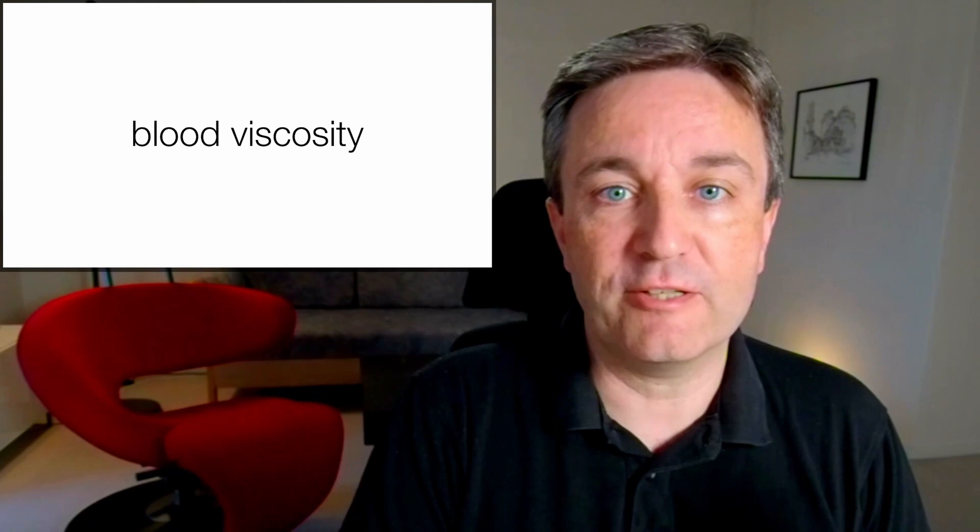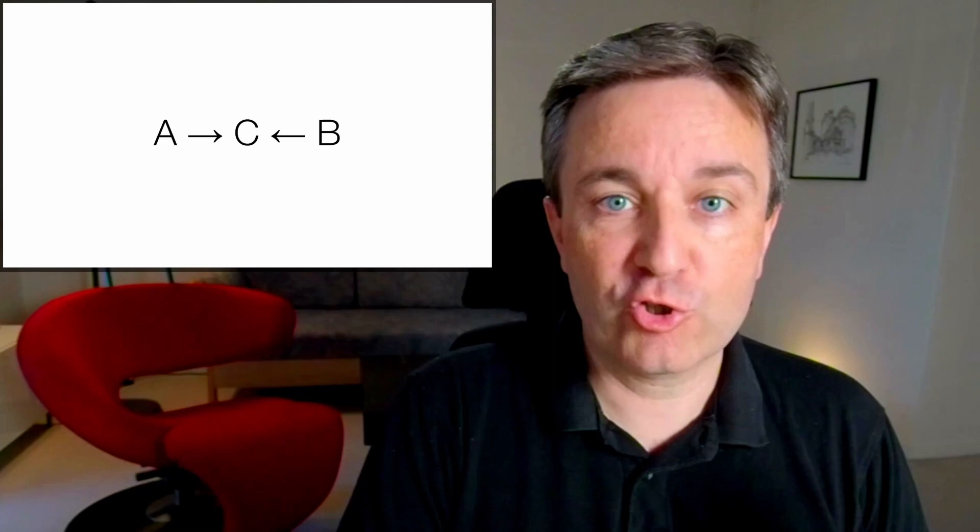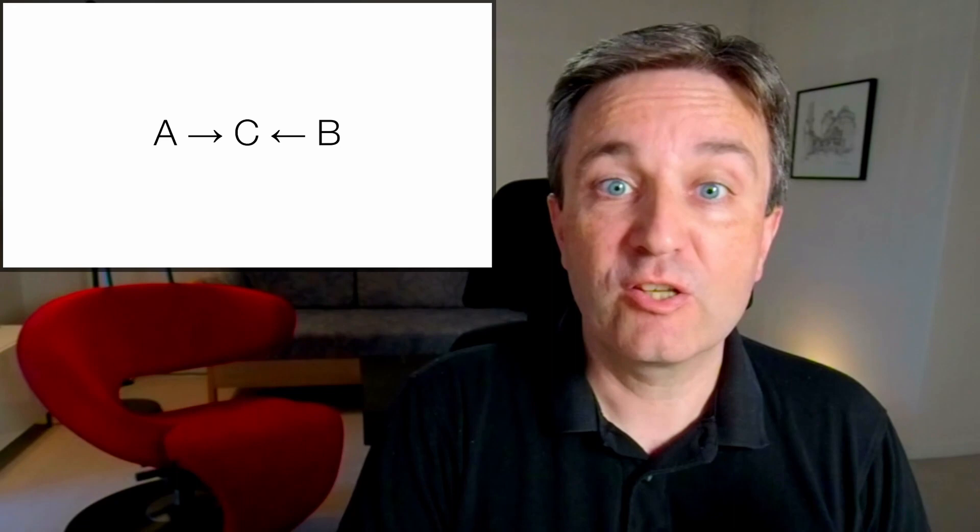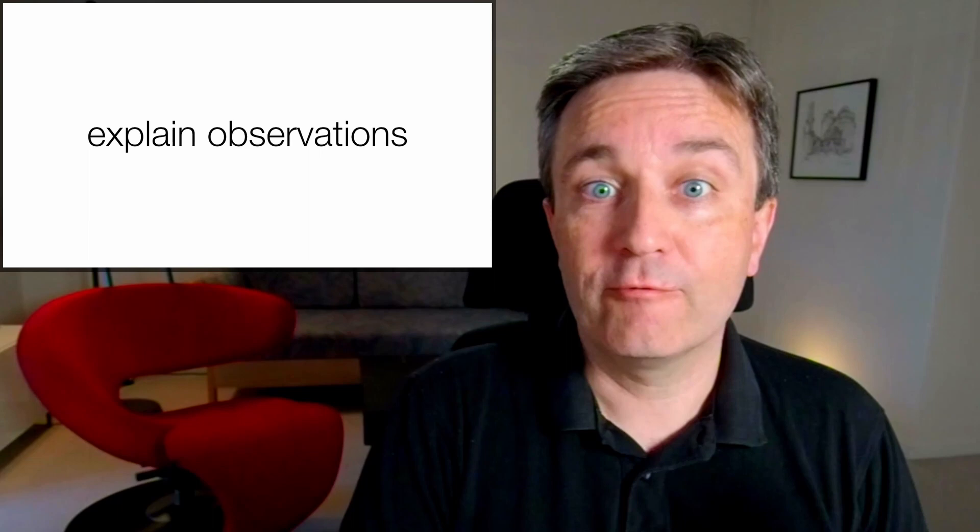This is known as literature-based discovery, and there are two variants of it. The first is what is called closed search. In this case, you have two different concepts, A and B, and you're looking for a link between them, C. This can be used to explain observations. If you've already seen that there seems to be a relation between A and B, but you don't know why, you can go hunting the literature for an explanation.